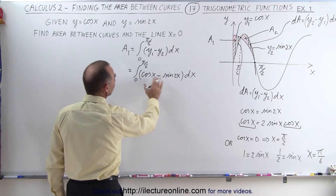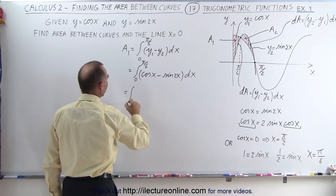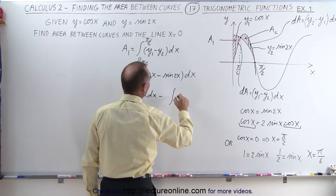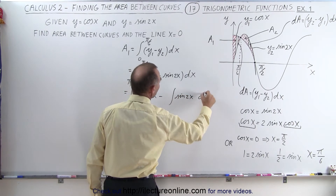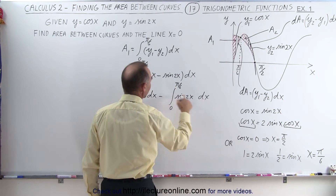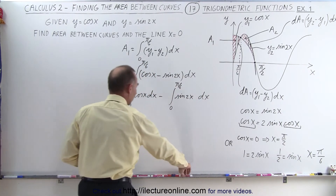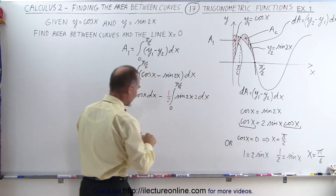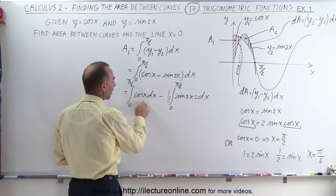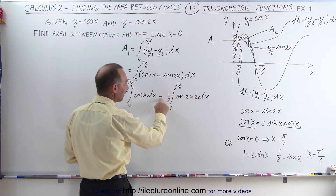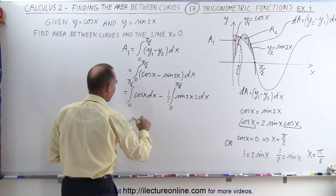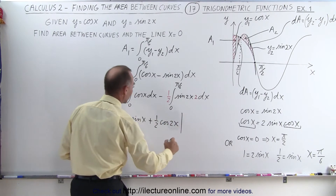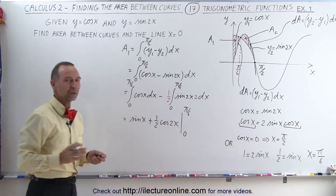We break this into two separate integrals: the integral from 0 to pi over 6 of cosine of x dx, minus the integral from 0 to pi over 6 of sine of 2x dx. To integrate sine of 2x, we need a factor of 2 dx, so we place one half in front to compensate. The integral of cosine is sine, and the integral of sine is negative cosine — so the negatives cancel, giving sine of x plus one half times cosine of 2x, evaluated from 0 to pi over 6.